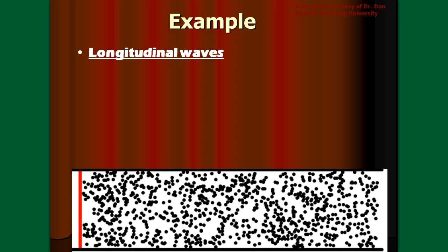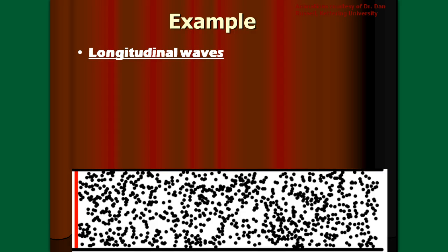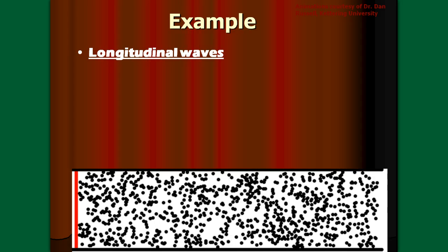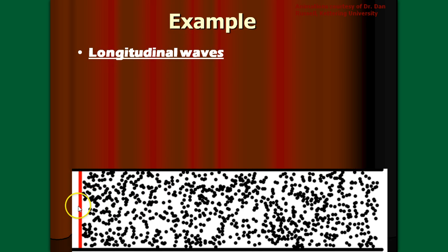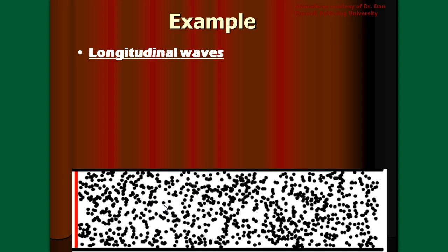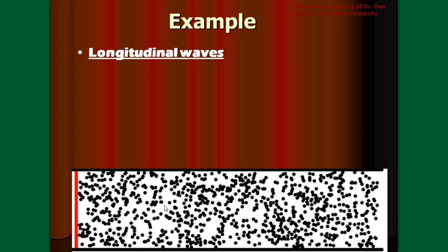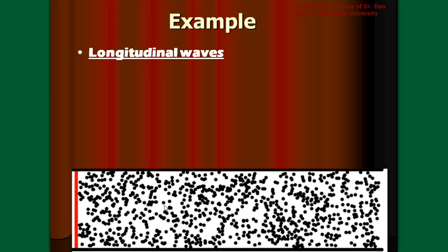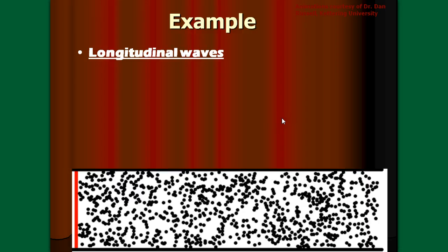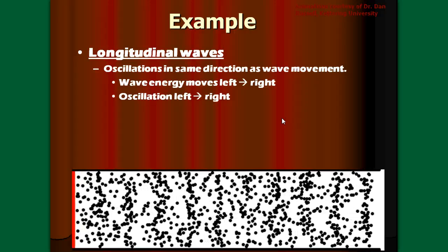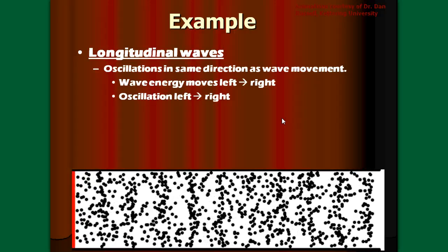Here's an animation of a longitudinal wave. As you can see, the wave clearly moves from left to right, starting with the red bar. We can trace the wave as it goes to the right across our screen. But if you look at each individual particle, you'll notice it goes right and then comes back to rest to the left, right and then left, repeatedly. So the individual particles do not move — we don't transfer matter, just like in a transverse wave.